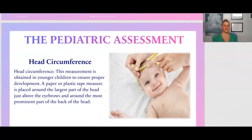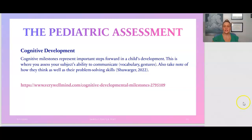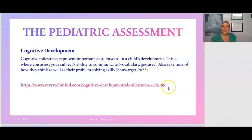Head circumference is obtained in younger children to ensure proper development. The plastic tape is placed around the largest part of the head, just above the eyebrows and around the most prominent part of the back of the head. Next, we assess cognitive development. Cognitive milestones represent important steps forward in a child's development — this includes assessing the patient's ability to communicate, their vocabulary, gestures, and how they think or problem solve. A CDC link is provided with an overview of all cognitive developmental milestones considered norms for growing children.